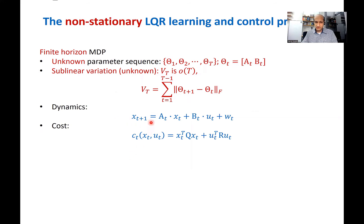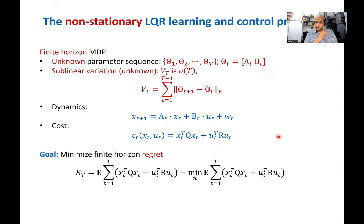The dynamics are similar to the stationary version, except that the matrices A and B are replaced by their non-stationary versions. The cost is the same as the stationary case. We assume that the matrices Q and R, which parameterize the cost, are fixed throughout the horizon and known to the algorithm. The only unknowns are the dynamics A and B. Our goal is to minimize the regret: the expected cost we incur while controlling the non-stationary system minus the cost of the optimal non-anticipatory policy.